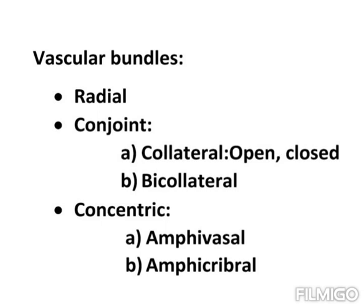The second type of vascular bundle is the conjoined vascular bundle. In conjoined vascular bundles, xylem and phloem lie on the same radius, unlike radial bundles where they are in different radii.